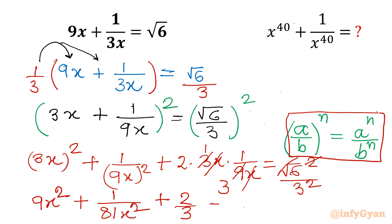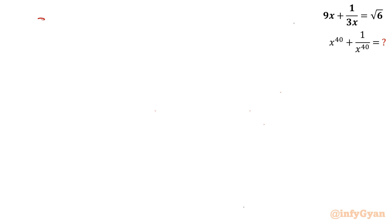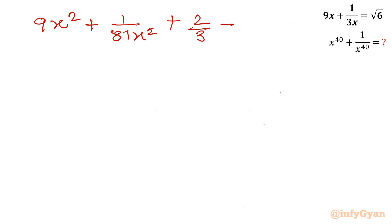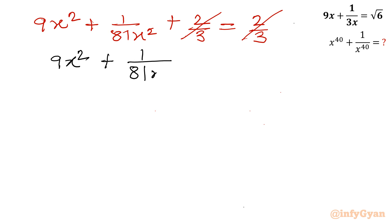Checking the right hand side: it is 6 by 9, which we can write as 2 by 3. So we have 9x squared plus 1 over 81x squared plus 2 by 3 equals 2 by 3. These two terms, 2 by 3 on both sides, will cancel out. What is left is only 9x squared plus 1 over 81x squared equal to 0.